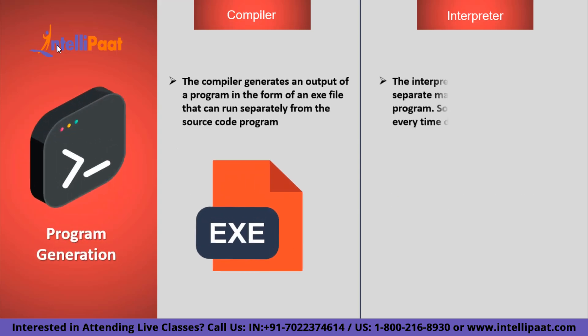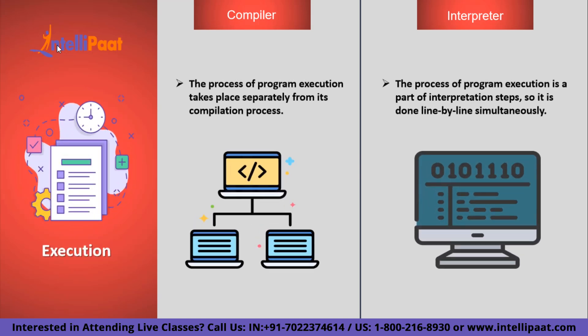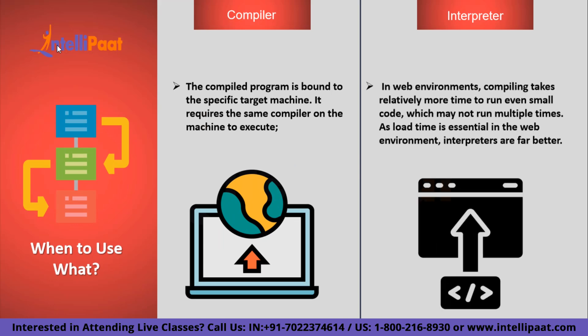The sixth differentiating factor is running time. A compiler takes an enormous time to analyze source code; however, overall compiled code runs faster. An interpreter takes less time to analyze source code but overall interpreted code runs slower. Next is program generation: the compiler generates output as an exe file that can run separately from the source code, whereas an interpreter doesn't generate a separate machine code output and checks the source code every time during execution. Finally, regarding execution as a parameter, program execution takes place separately from compilation and only after the complete program is compiled, whereas with an interpreter, execution is part of the interpretation steps.